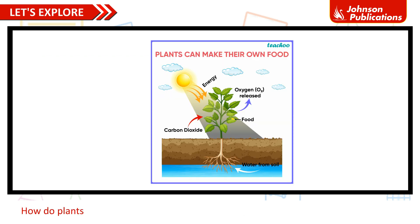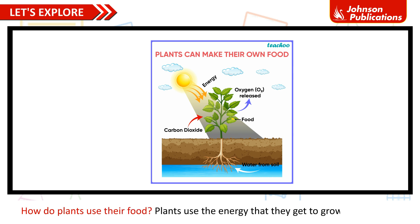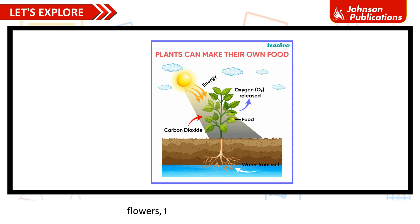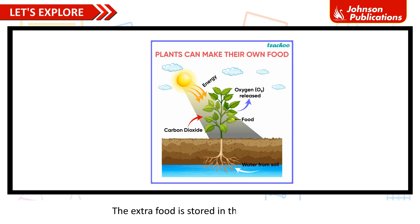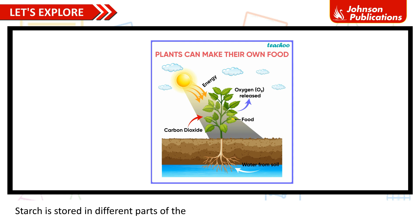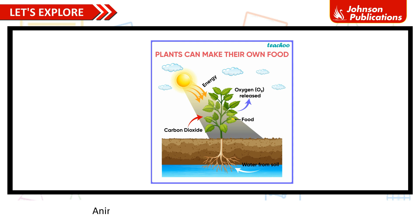How do plants use their food? Plants use the energy that they get to grow and produce flowers, fruits, seeds and more leaves. The extra food is stored in the form of starch. Starch is stored in different parts of the plant such as fruits, leaves, seeds, roots and stem. Animals and humans eat these parts of plants as food.